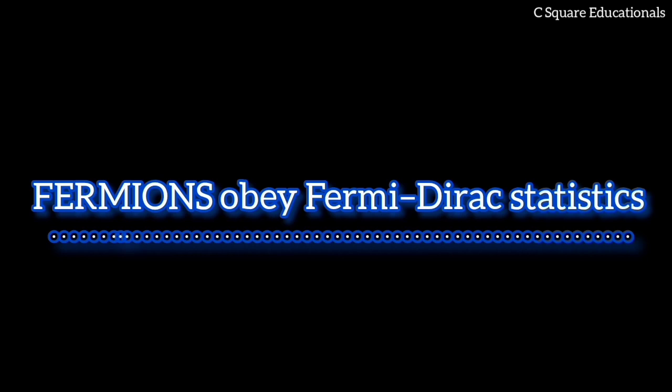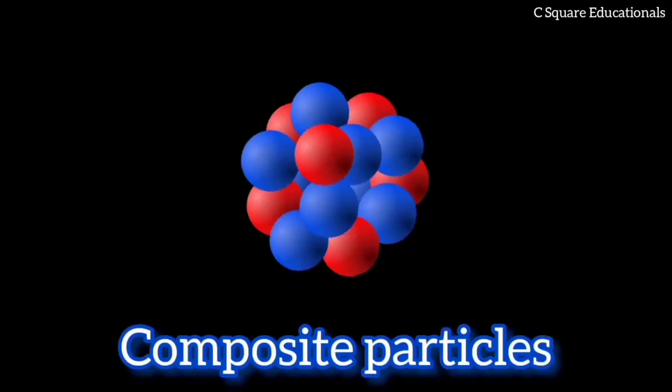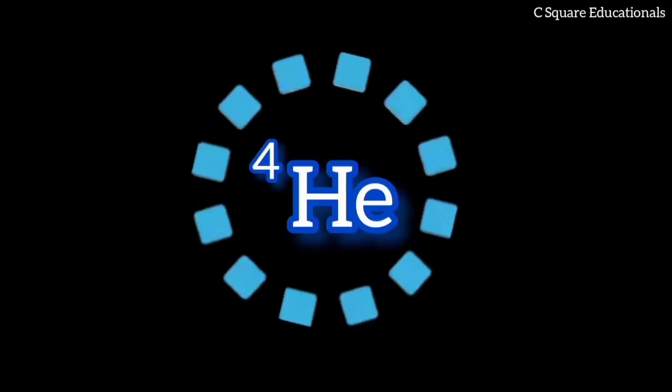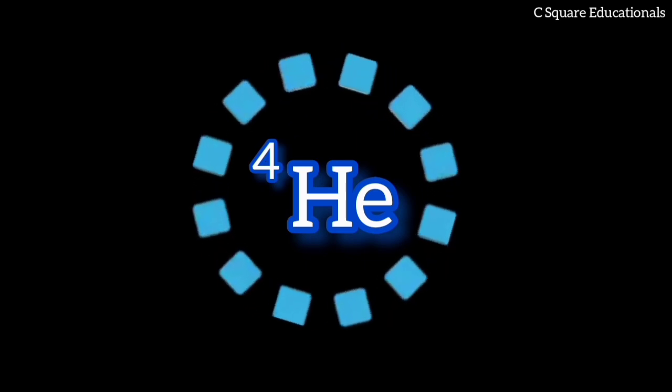Fermions obey the rules of Fermi-Dirac statistics. In contrast, bosons obey the rules of Bose-Einstein statistics and have no such restriction, so they may bunch up together in identical states. Also, composite particles can have spins different from their component particles. For example, helium atoms in the ground state have spin zero and behave like bosons, even though the quarks and electrons which make them up are all fermions.